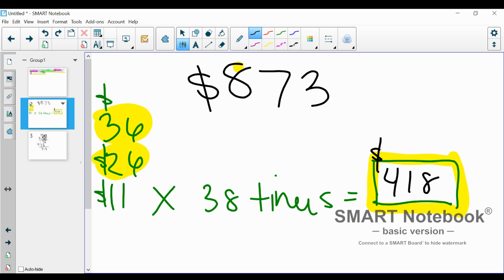All these yellow highlighted areas here is how much money he already has. He has $36, $26, and $418. And we're trying to get to $873. So we're going to add these three. We're going to add this one, and this one, and this one, and see how close we are to that $873.